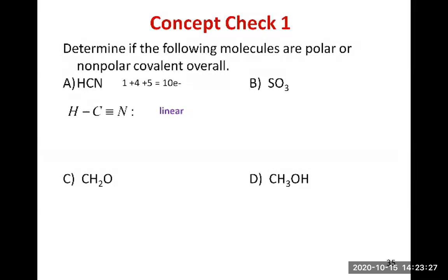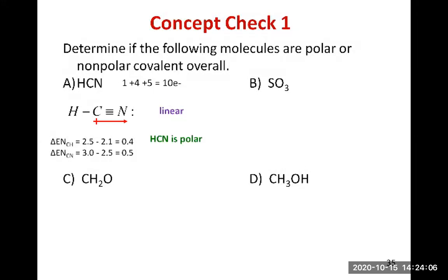Now let's check for polar bonds in HCN. The C–H bond has an electronegativity difference of 0.4, which is non-polar. The C–N bond has a difference of 0.5, which is polar, and it's oriented toward nitrogen as the most electronegative element. You draw the dipole moment from carbon toward nitrogen. Is HCN polar overall? Yes — that single polar C–N bond is not cancelled by anything, since the C–H bond is non-polar. HCN is polar with a net dipole matching the C–N dipole.